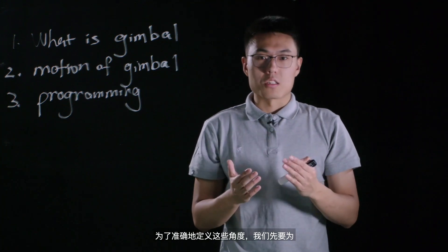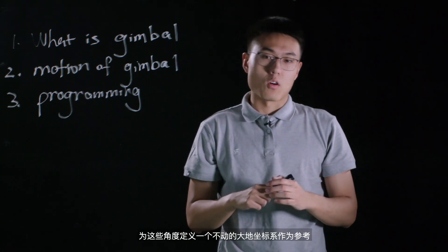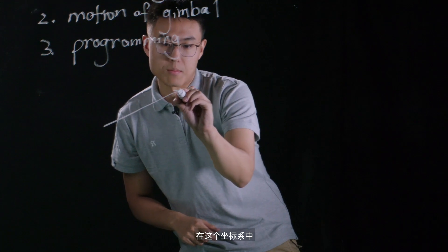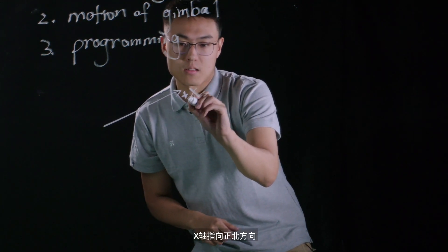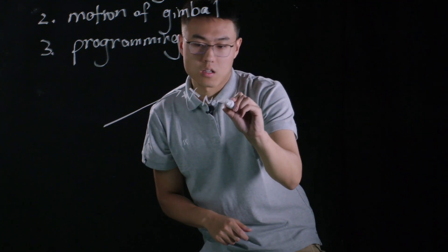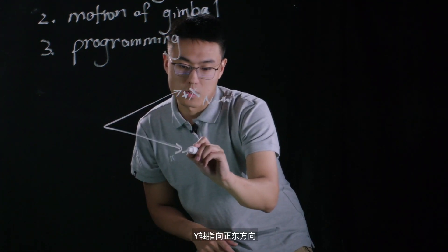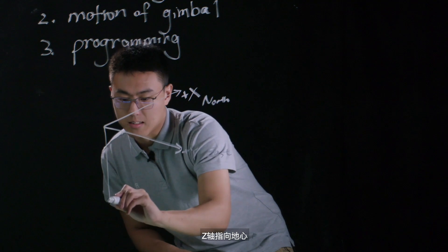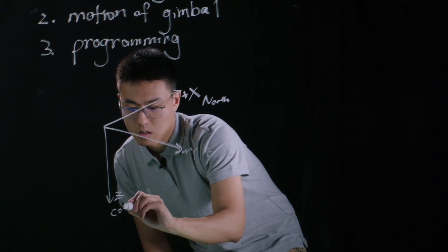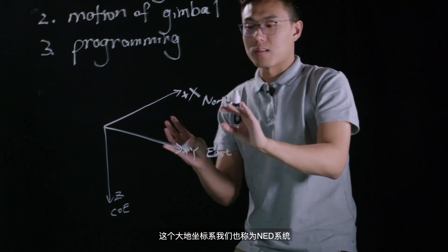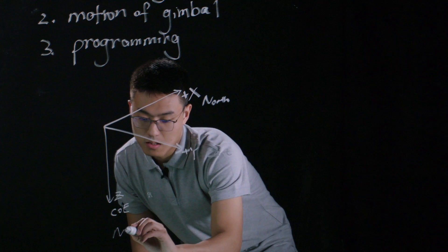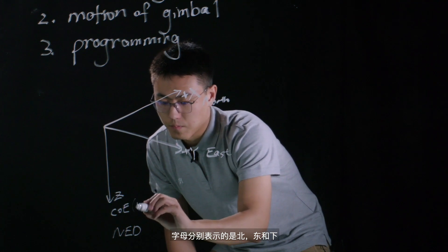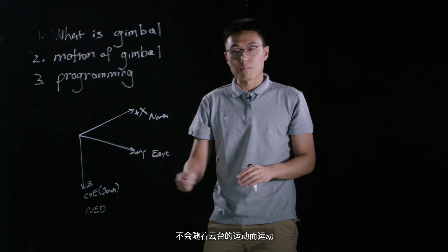To define these angles, the first thing we're going to do is to set up a fixed local tangent plane coordinate system. In this coordinate system, the x-axis points to north, the y-axis points to east, and the positive z-axis points to the center of the earth. This coordinate system is also called the NED system, which represents north, east, and down. This coordinate system is fixed and will not move with the gimbal of S1.